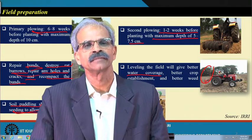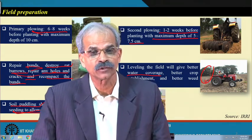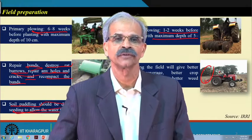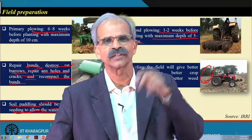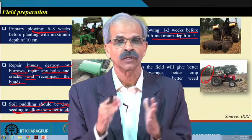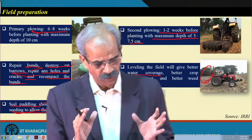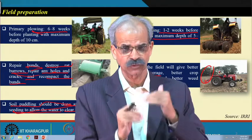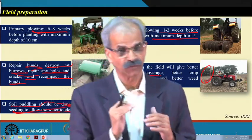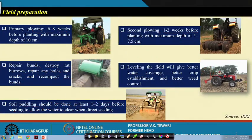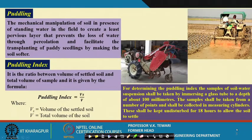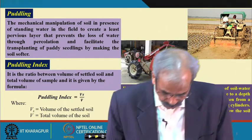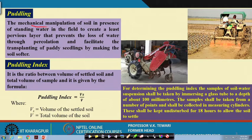When I explained different equipment for transplanting paddy, I showed you a drum seeder where we talked of direct seeding — small germinated seeds in drums. Now when we are talking of transplanting and growing seedlings, after field preparation we maintain puddling — churning of the soil with a certain standing of water. Puddling is the mechanical manipulation of soil in the presence of standing water, and its main aim is to prevent loss of water through percolation.